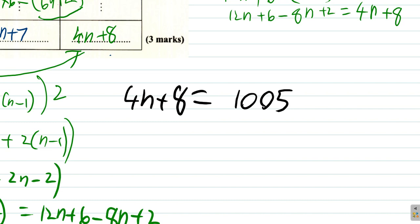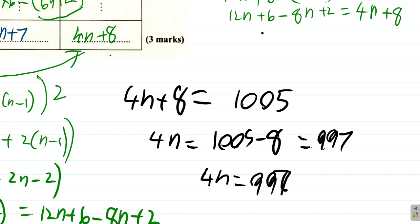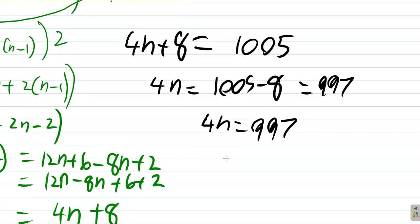So, let's simplify this and see. 4n plus 8 is 1005. Subtract 8 from both sides. So, 4n is equal to 1005 minus 8. Right? So, you have 1005 minus 8, what do you get? 997. So, 4n is equal to 997. Let me rewrite that part. 997. Now, n would be 997 over 4.